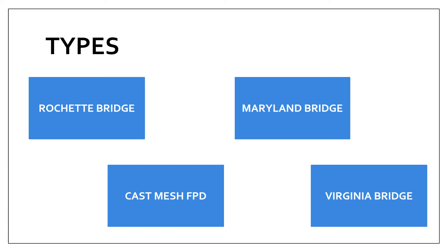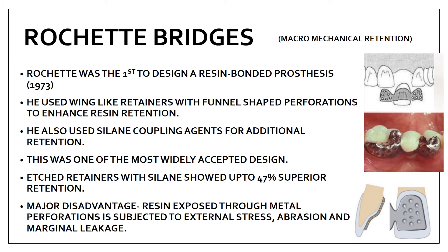The four types of resin bonded fixed partial dentures are: the Rochette bridge, the Maryland bridge, cast mesh fixed partial dentures, and the Virginia bridge.